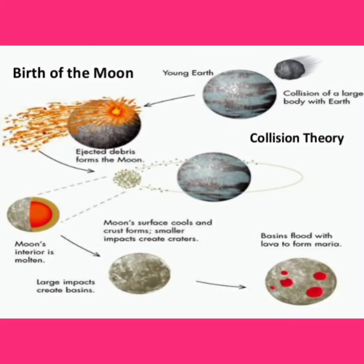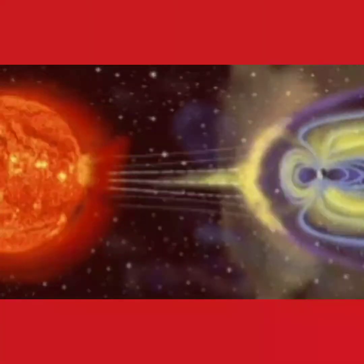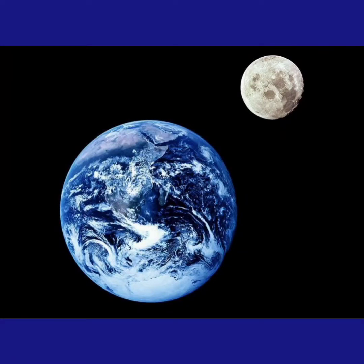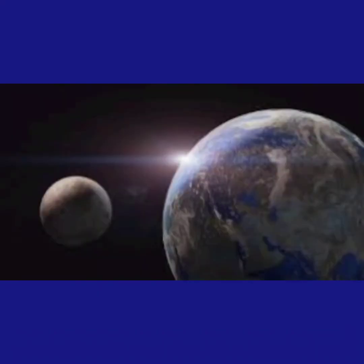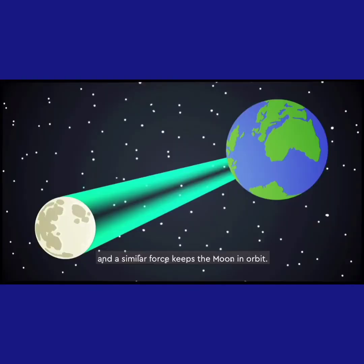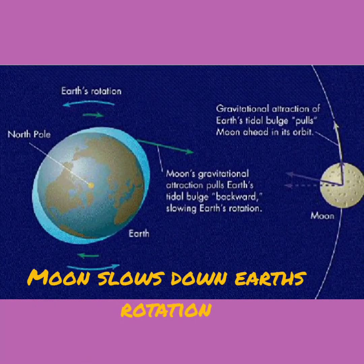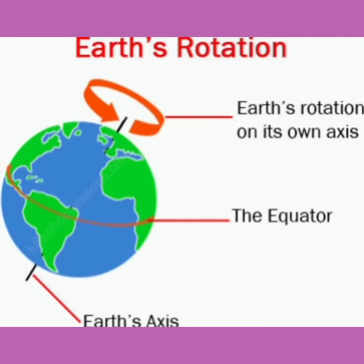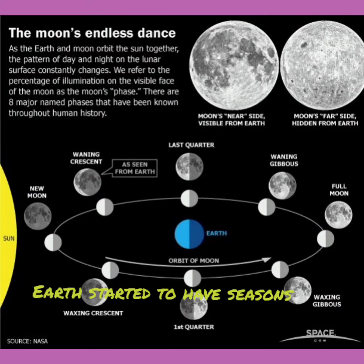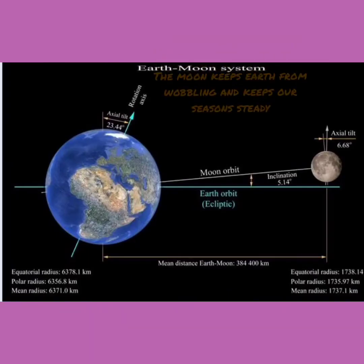The next important event in the Hadean Eon was the formation of the Moon. An object headed towards Earth at tremendous speed — it did not hit Earth directly but grazed the side. Earth's gravity pulled the Moon into its orbit. The formation of the Moon had a profound effect on Earth's climate: it slowed down Earth's rotation, tilted Earth on its axis, Earth started to have seasons, the Moon stabilized Earth from wobbling, and a balanced climate developed on Earth.